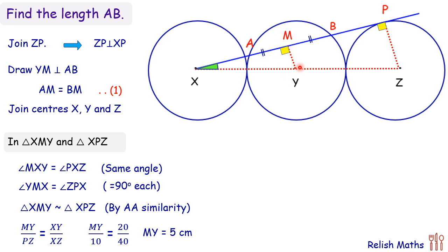So we have found the length of MY. Now we have to find the length of AB. What we will do is we will first find the length of BM and then we will make twice of it to get AB.